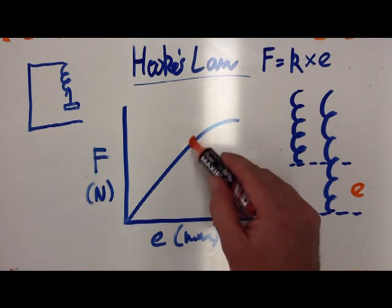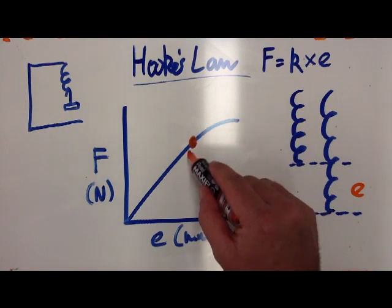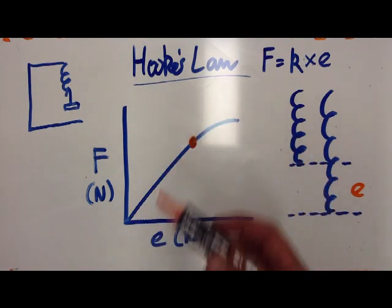After the limit of proportionality, the gradient, that's the slope, is no longer constant, and the line is no longer a straight line through the origin. So this is Hooke's Law.